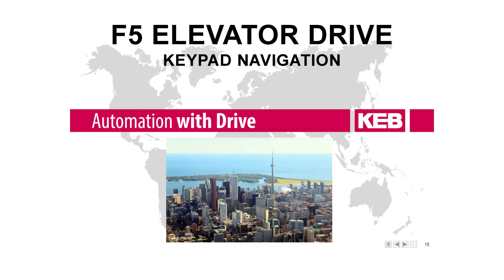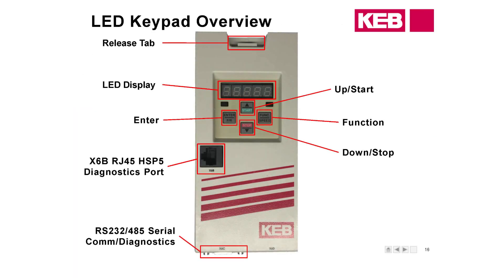Just an overview of some features of the older keypad. We've got the X6C serial port down here, so if you're using serial speed control to the controller, that's where you would plug the serial cable in. We have an X6B diagnostic port — if you're using the inverter scoping software ComniViz, this is where you would plug that into.